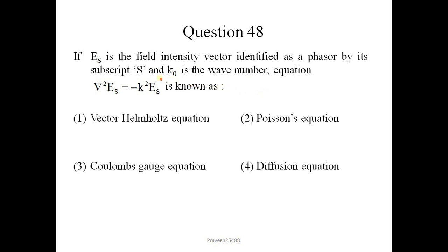Next question is. If ES is the field intensity vector identified as a phasor by its subscript S and K0 is the wave number. Equation is known as. So I will show you all the equations given in the option. Vector Helmholtz equation, Poisson's equation, Coulomb's Gauss's equation, and diffusion equation. So this form of vector Helmholtz equation is given in the equation. So correct option is 1.